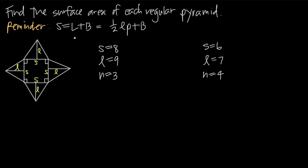When we have a regular pyramid and want to find surface area, the formula is SA = L + B, where L is the area of the lateral faces and B is the area of the base. You'll also see it written as SA = ½ × L × P + B, where L is the lateral height (the height of one of the triangular sides), P is the perimeter of the base, and B is the area of the base.